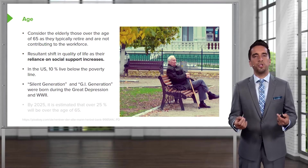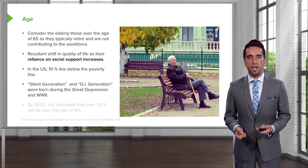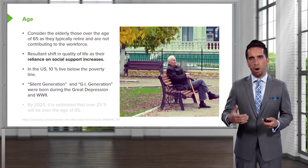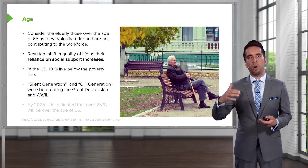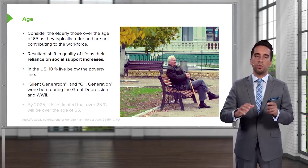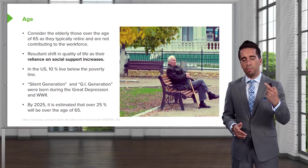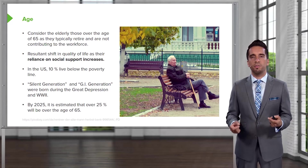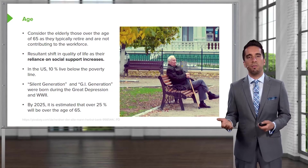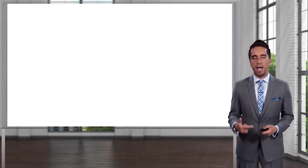We also have the silent generation, or the GI generation — individuals born during the Great Depression and World War II. They're much more elderly than baby boomers and are at greater risk of being below the poverty line. By the year 2025, it's estimated that over 25% of individuals in North America will be over the age of 65, meaning this is going to be an increasingly prominent issue that we need to plan for.